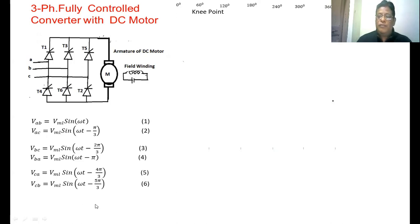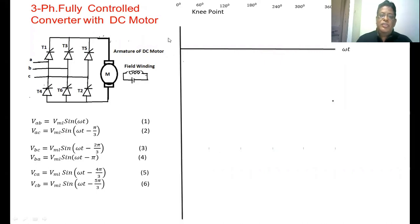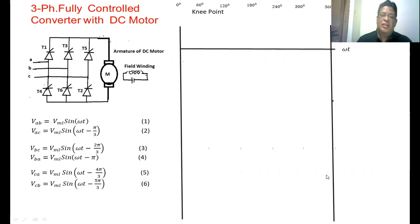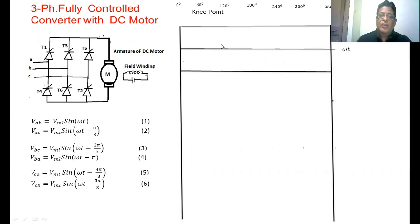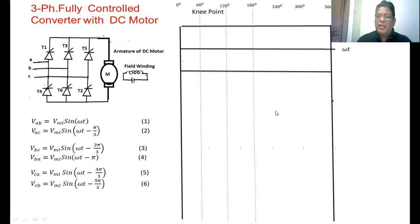We are going to draw the input voltage waveform. On the x-axis I have taken ωt — the angle. At 0 degrees I have taken one vertical line and at 360 degrees another vertical line, because I am going to draw the input voltage within one cycle. At every 60 degrees I am going to take a dotted vertical line. The positive maximum voltage and the negative maximum voltage are marked accordingly, with vertical lines at 60, 120, 180, 240, and 300 degrees.